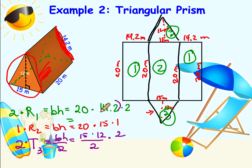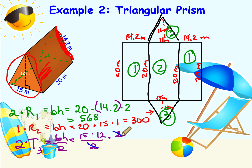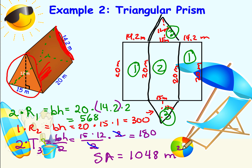The last step is to find the sum. Our surface area is 568 plus 300 plus 180, which equals 1,048 square meters.